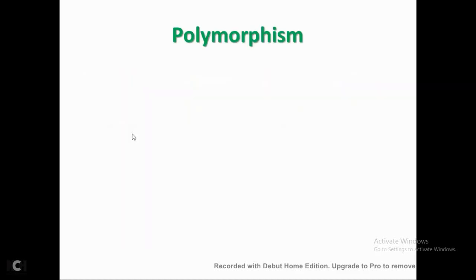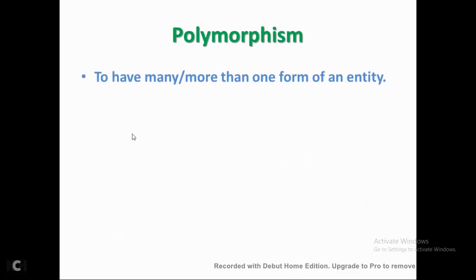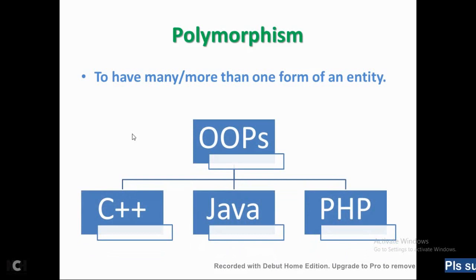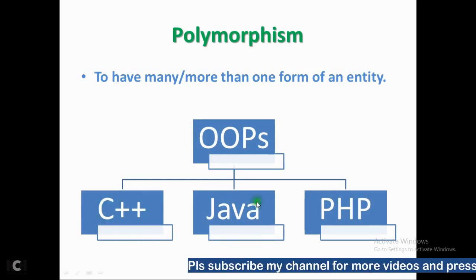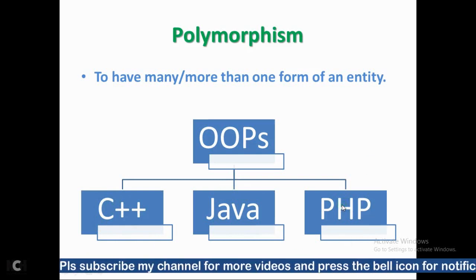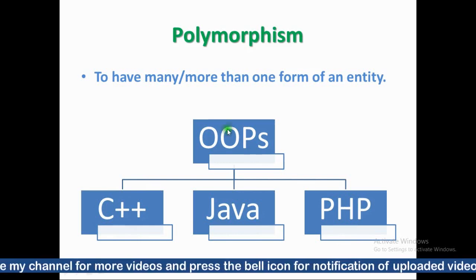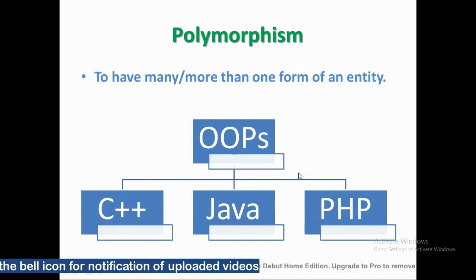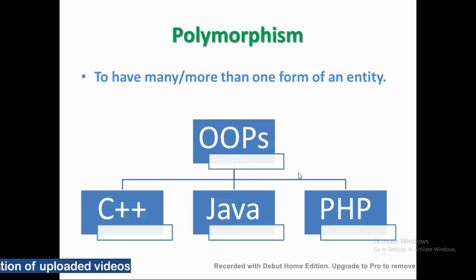Polymorphism means to take more than one form — an entity can have many or more than one form. An entity could be a place, an object, a title, a personality. In object-oriented programming, polymorphism is a key aspect. OOP concepts are followed by many languages such as C++, Java, PHP, Python, JavaScript, and many more. I was looking for a common example to explain it further.